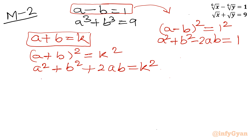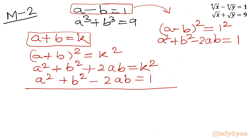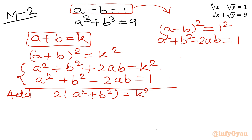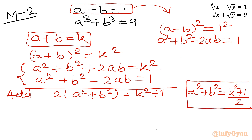From these two equations, adding them gives 2(a² plus b²) equals k² plus 1, so a² plus b² equals (k² plus 1) divided by 2. Subtracting them gives 4ab equals k² minus 1, so ab equals (k² minus 1) divided by 4.